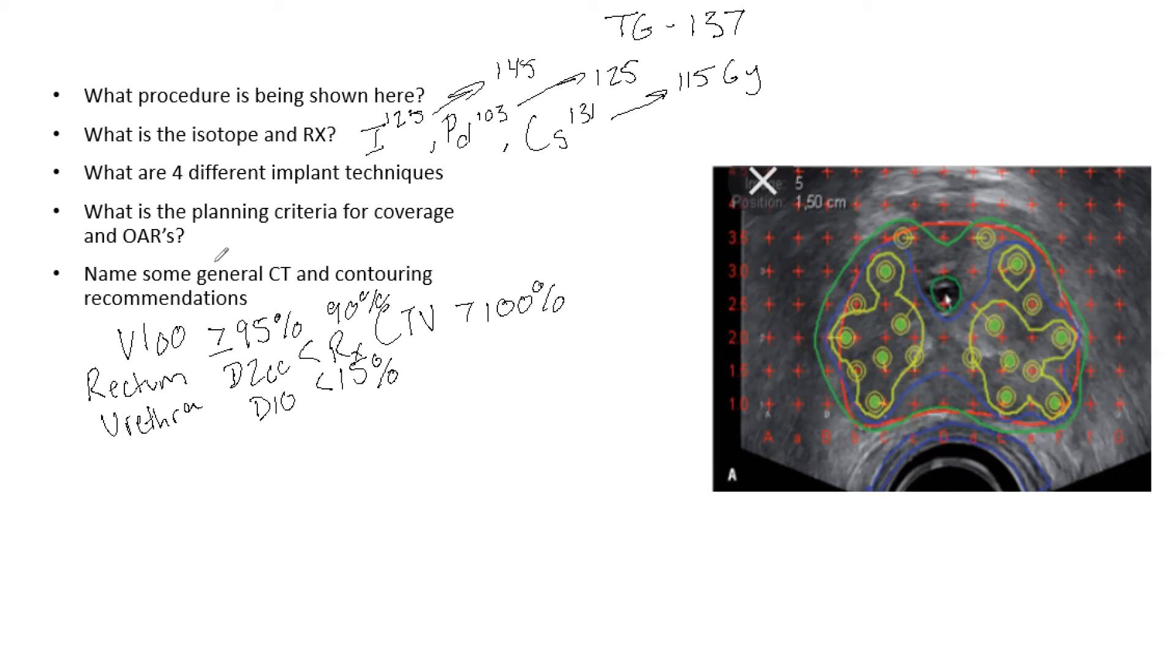The general CT and contouring recommendations. There is just a lot to know. Hopefully you have some experience with it. Also, maybe with the previous question too, you want 150% of your dose to the urethra, less than one CC. So that's almost not quite max dose, but you want less than one CC to get that.